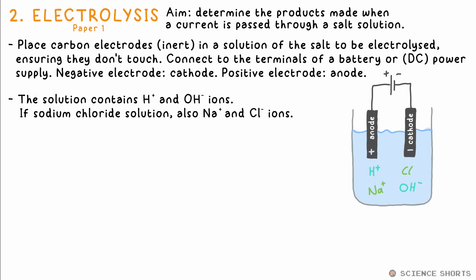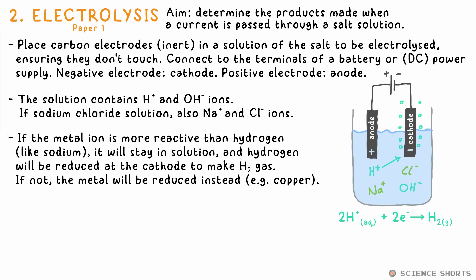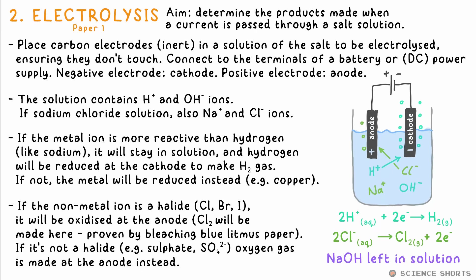A positive ion — a cation — will be reduced at the cathode. A negative ion — an anion — will be oxidized at the anode. If the cation in solution is more reactive than hydrogen, it will stay in solution and hydrogen will be reduced to make H₂ gas. This is what happens with sodium chloride, because sodium is more reactive than hydrogen. If the positive ion is less reactive than hydrogen — say we had copper chloride instead — copper would be reduced at the cathode. If the negative ion is a halogen, which chlorine is, it will be oxidized at the anode to make a gas — chlorine gas, Cl₂, in this case. If it's not a halogen, say sodium sulfate instead, it's oxygen gas that's made at the anode.